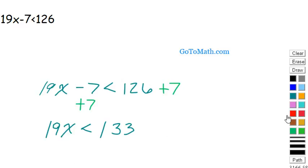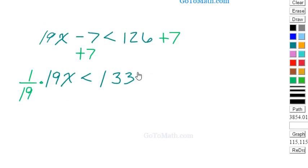And now we multiply by 1 over 19 to both sides, the reciprocal, because we want to get a 1 here for the coefficient of x. 1 over 19. And so now we're left with x, no need in putting a 1 there.